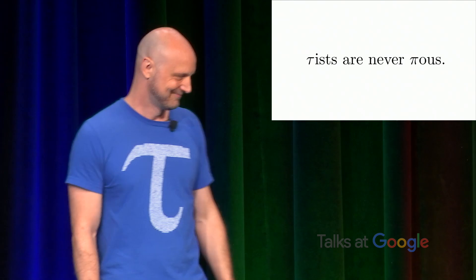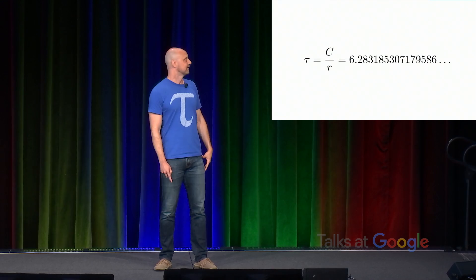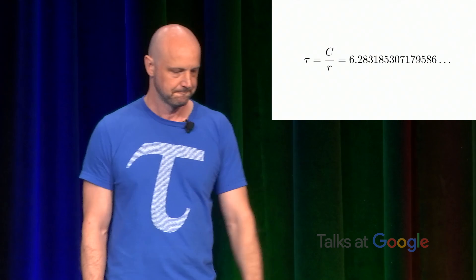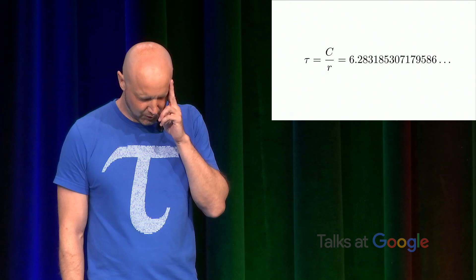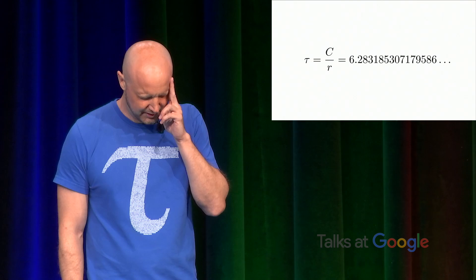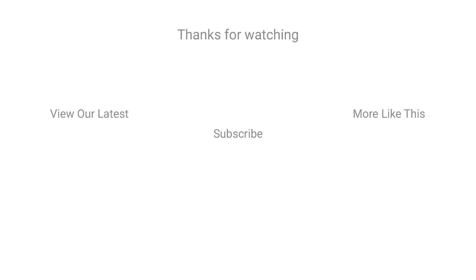So I hope you'll join me in celebrating the true circle constant, C over R, and I hope you'll also join me in calling it Tau. I'd like to leave you with some words of wisdom, some words that have a great deep and personal meaning to me, and I hope they'll have the meaning for you as well. Those words are 6.28-3185-307179-5864-769-2528-676655-90057-6839-4338-502116. Thank you.